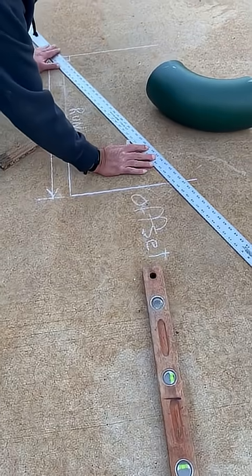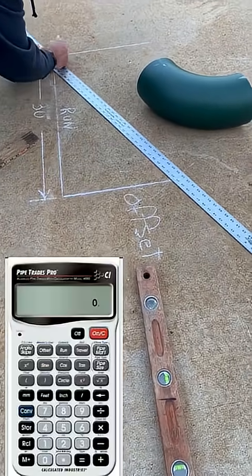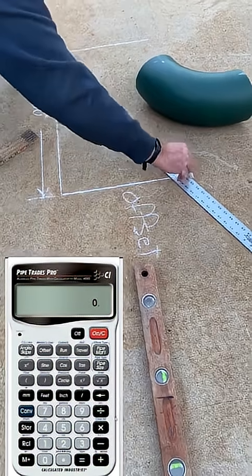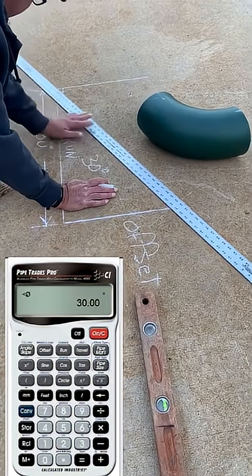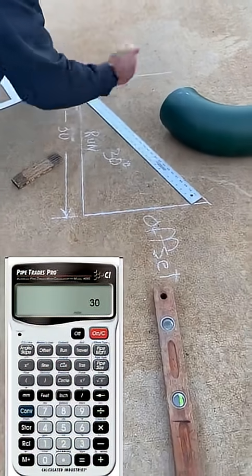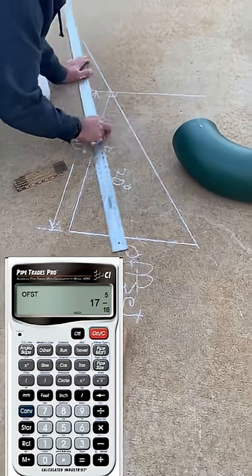So I have to come up with the offset. With my Pipetroids Pro, I'm going to enter 30, press angle slope key, tell it I have a 30 inch run, press the offset key and I get 17 and 5 sixteenths.